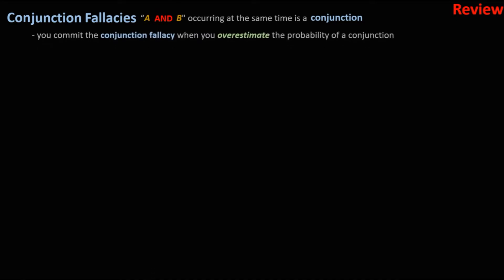Let's take a look at a conjunction fallacy. A and B occurring at the same time is a conjunction. You commit the conjunction fallacy when you overestimate this probability.